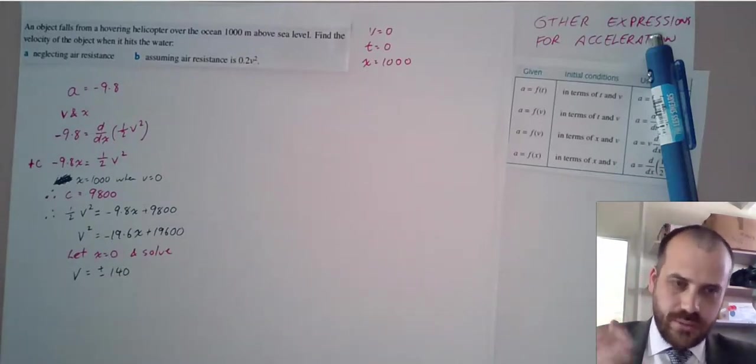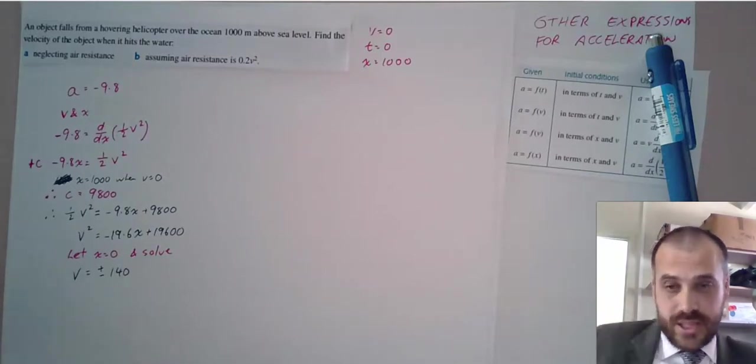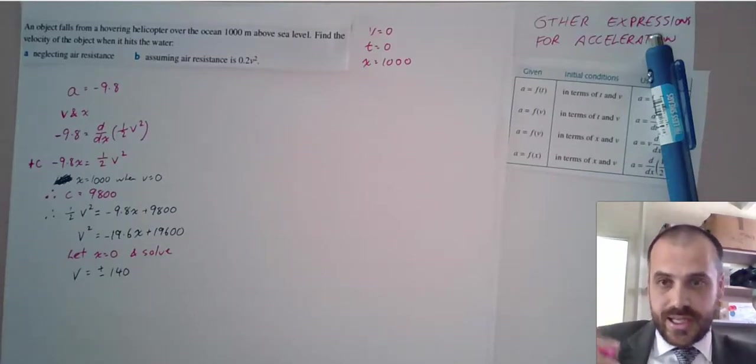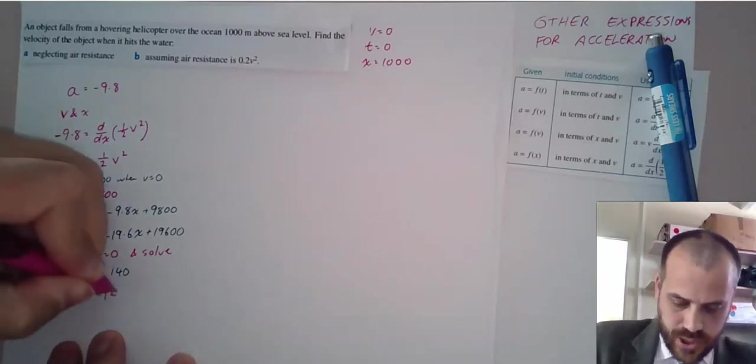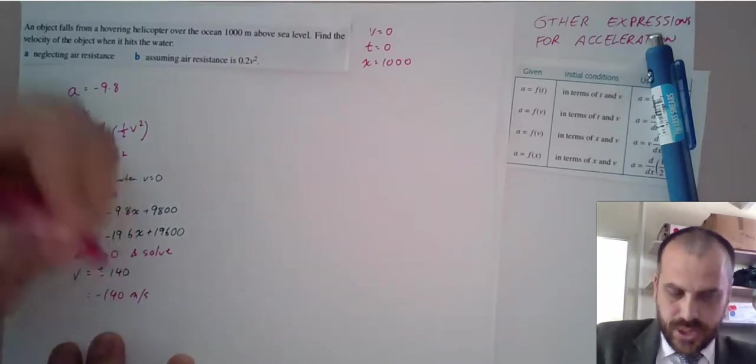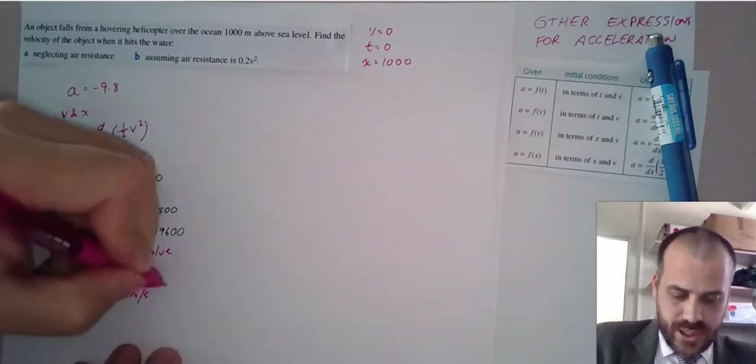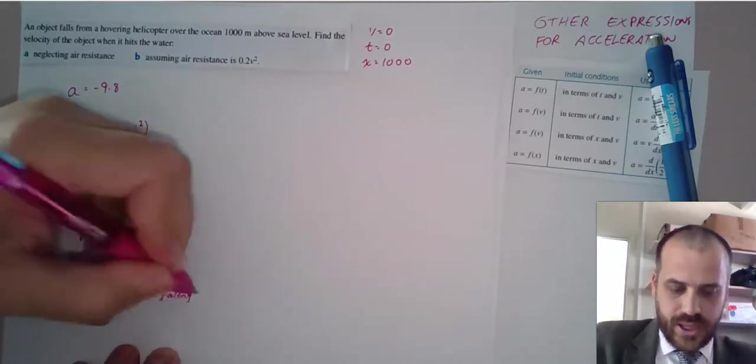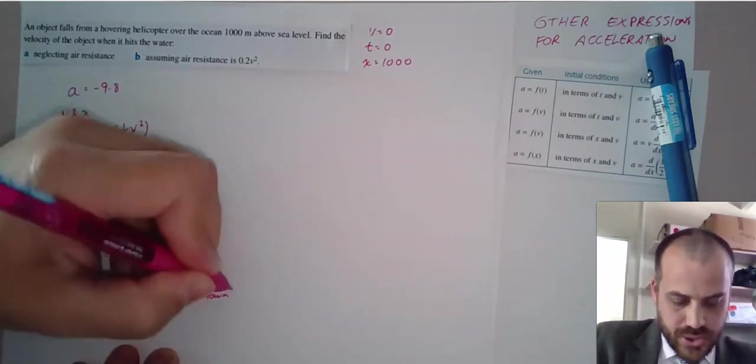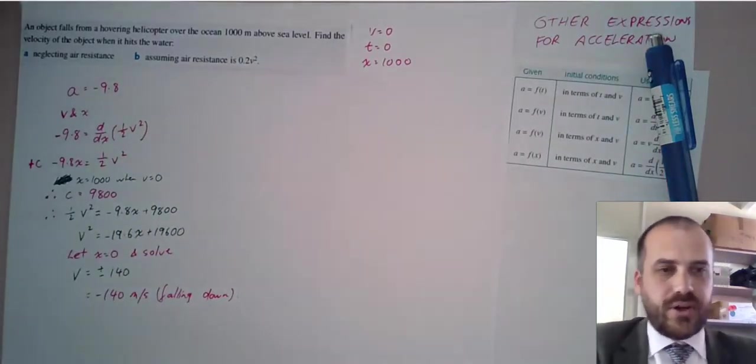Now, I need to interpret that. Remember, velocity is directional. This thing is falling down. So its velocity is negative, negative 140 meters per second because it's falling down. Okay, so you need to be able to reject the positive in this instance, something we don't do very often.